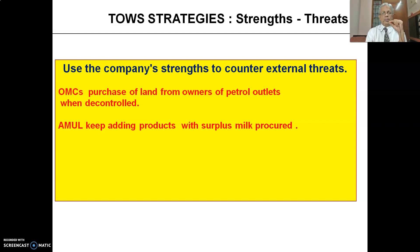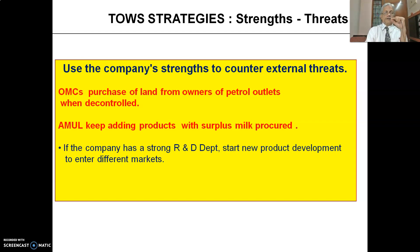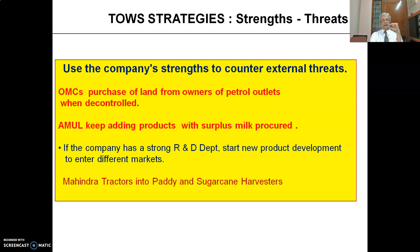Similarly, Amul is able to get large amounts of milk from its procurement area, but beyond a certain point they found it difficult to push milk, and margins were also very limited. So they kept adding more and more milk-based products, giving them a lot of competitive advantage and keeping competitors worried. If a company has a very strong R&D department, they can develop new products to enter different markets. A good example is Mahindra tractors — when competition in the tractor segment was very high, Mahindra moved into paddy and sugarcane harvesters where the market was good and few branded players were present. Today, almost 100% of paddy in India is harvested using mechanical harvesters.